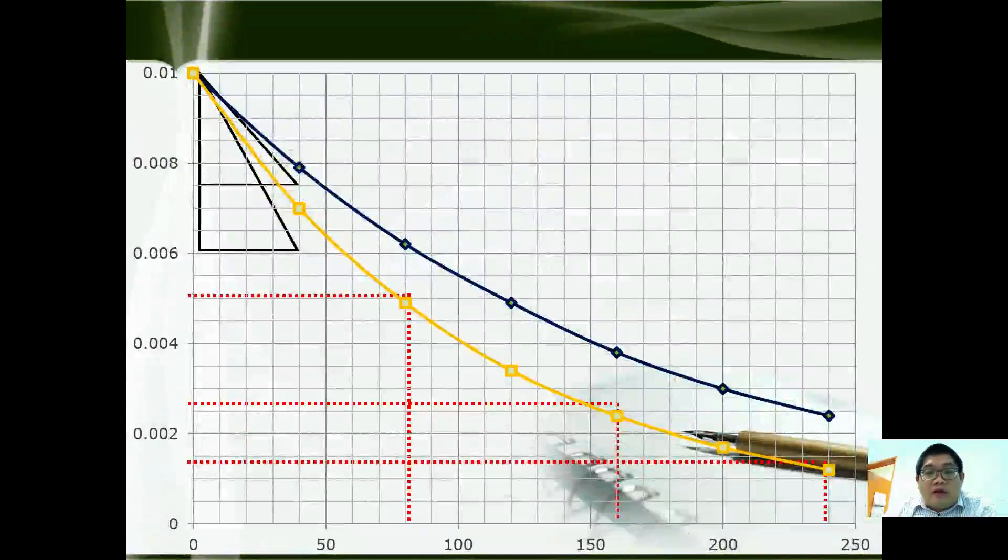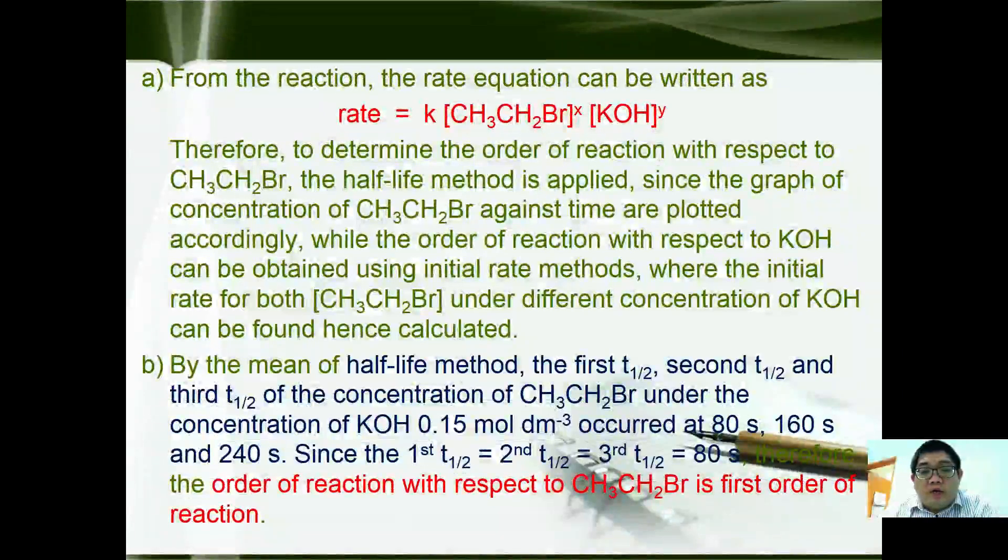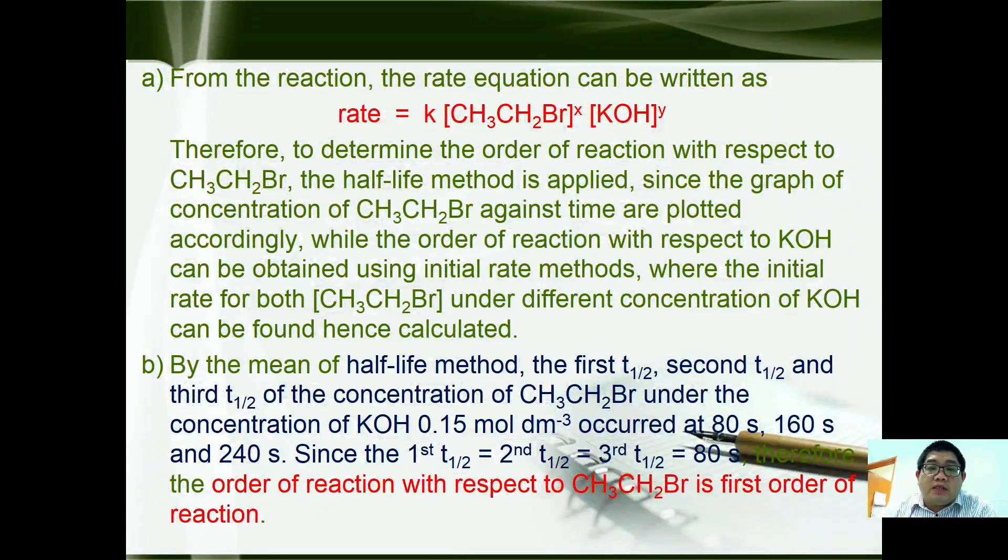We can plot both of the graphs in the same graph paper. This is the graph given by 0.15 and this is the graph given by 0.10. We can use any graph to determine the half-life of the reaction. If we start from 0.01, first half-life at 0.05 is 80 seconds. Then at 0.025 is 160 seconds. And the third half-life will be 240 seconds. Since the first t₁/₂ = second t₁/₂ = third t₁/₂, the order of reaction with respect to CH₃CH₂Br is first order.